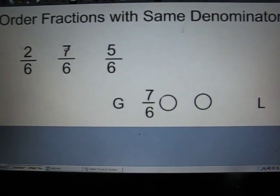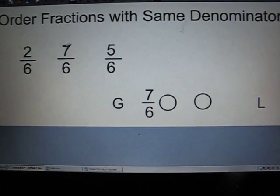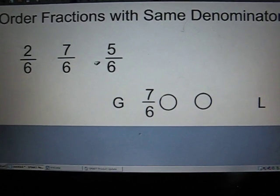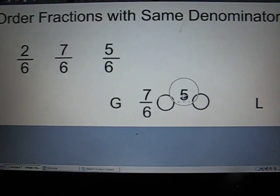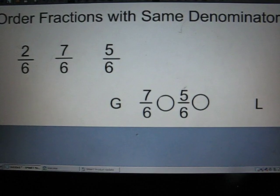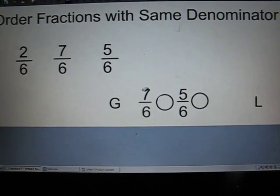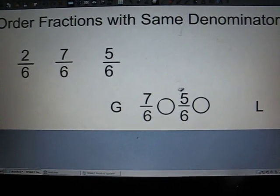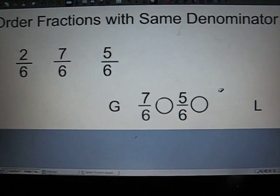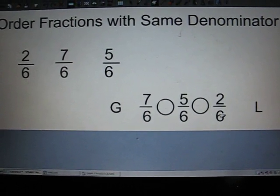So now we've used 7 sixths. Now which one is the next largest? 5 or 2? 5. So 7 sixths had the most shaded in. 5 sixths is next. And then, of course, the least amount shaded in is 2 sixths.